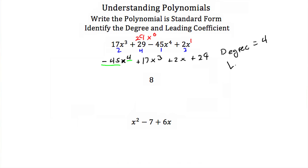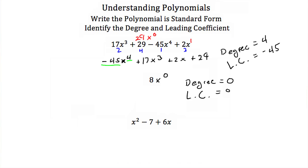Let's look at the next example. Our next example is just the number 8. You can think of this as 8 times x to the 0, because x to the 0 is just equal to 1. So our degree would be equal to 0. Our leading coefficient is just 8, because our x to the 0 term is multiplied by 8. And to write this in standard form — well, it's only one term, so it's already in standard form.